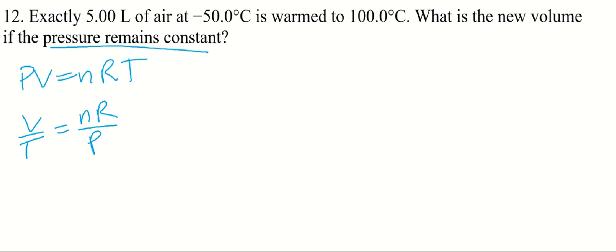All right, well, if the right side is just a constant, we can say that V1 over T1 is equal to V2 over T2. And the reason we need this is because we have a set of conditions that are changing. A gas is being warmed. So we have a before and after scenario. Okay, by the way, this is known as Charles' Law.